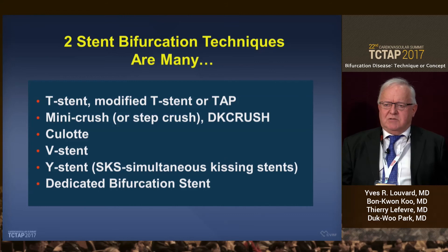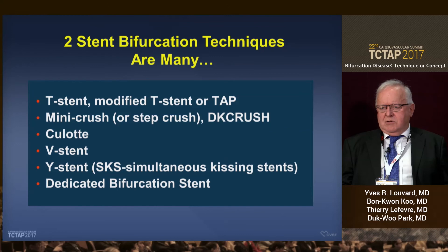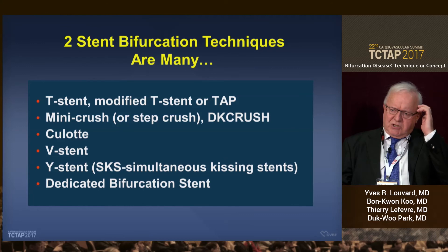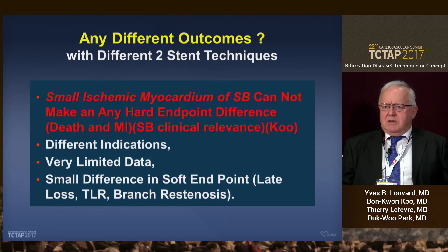These are a partial list of double stenting techniques. I have to say that we see here one culotte, but in fact there are two culotte techniques — one beginning with the main vessel as part of the provisional stenting strategy, and the other beginning with the side branch, which is slightly different technically. You can see here the so-called SKS technique, which I think is a salvage technique only. And I want to say a word about dedicated bifurcation stents — the only one still living is the treatment stent.